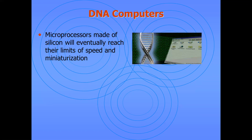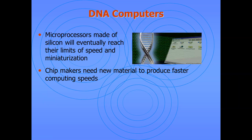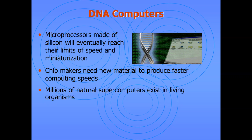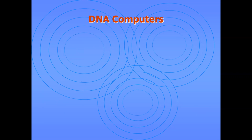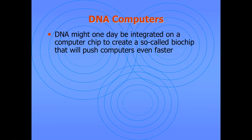Microprocessors made of silicon will eventually reach their limits of speed and miniaturization, so chip makers need new materials to produce faster computing speeds. Millions of natural supercomputers exist in living organisms. DNA — deoxyribonucleic acid molecules — have the potential to perform calculations many times faster than the world's most powerful human-built supercomputers, and DNA might one day be integrated onto a computer chip.